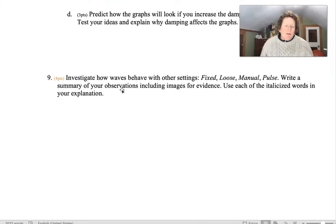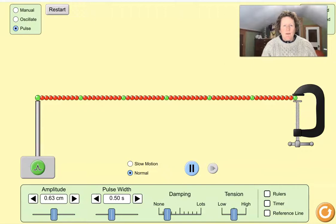Number nine is investigate how waves behave with other settings. Fixed, loose, manual, pulse. Write a summary of your observations, including images for evidence. Use each of the italicized words in your explanation. So, make sure you use the word fixed, loose, manual, and pulse in your explanation. So, we can see here, here's manual.